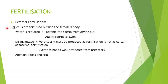External fertilization is when the egg cells are fertilized outside the female's body. Water is required because it prevents the sperm from drying out and allows the sperm to swim — it acts as a medium. A disadvantage is that more sperm must be produced as fertilization is not as certain as internal fertilization; the sperm is just deposited over the eggs where they are laid, so it's not directed through the female's reproductive organs. The zygotes that are made are also not as well protected from predators, as they are left in the environment. The animals that use external fertilization are frogs and fish.